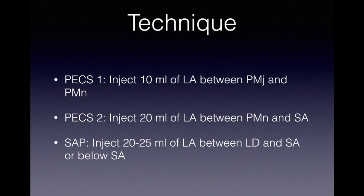The technique is a very easy block. You inject 10 ml of LA between pectoralis major and pectoralis minor for PECS1. You inject 20 ml of LA between pec minor and serratus anterior for PECS2. For serratus anterior plane block you inject 20 to 25 ml of LA between latissimus dorsi and serratus anterior.